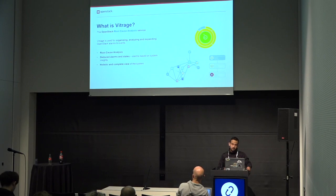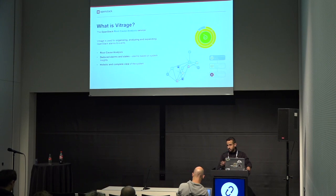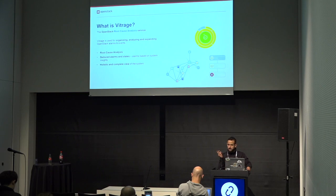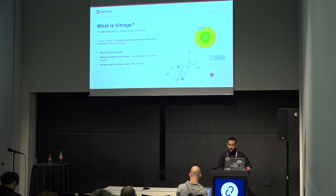The second function is raising deduced alarms on resources that might not be directly monitored. Using a detailed topology graph, Vitrage has a deep understanding of the system, so it can raise deduced alarms on those affected resources. For example, if you have a host and the NIC is down, the instance on that host would be unreachable. But Nova is not aware that the instance is down, so we raise a deduced alarm and inform Nova about that.